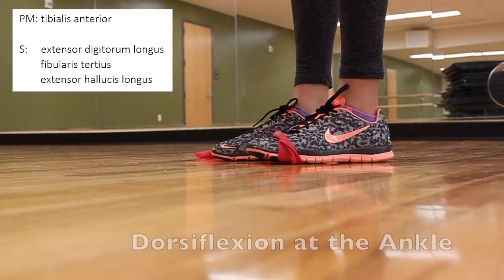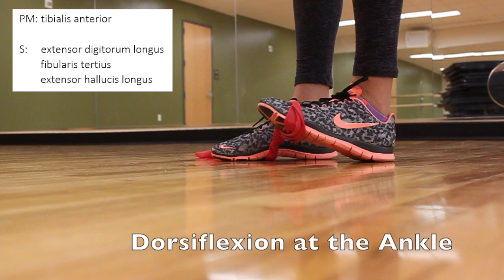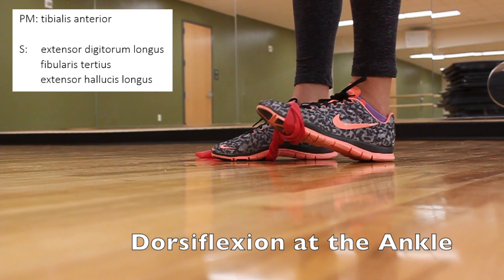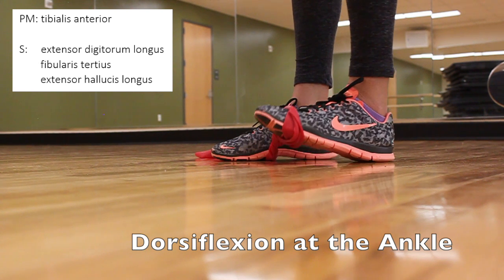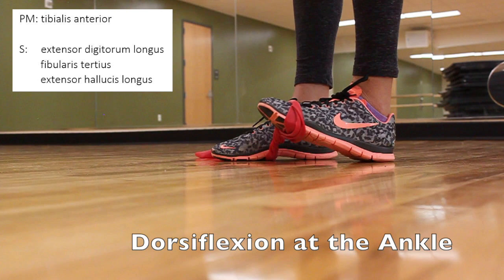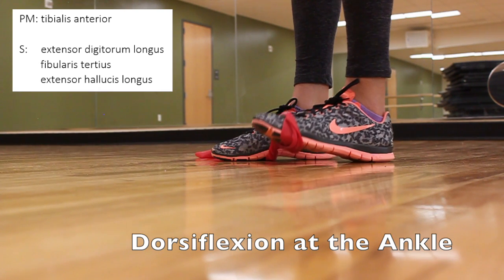This is dorsiflexion at the ankle. The prime mover is tibialis anterior. The synergists are extensor digitorum longus, fibularis tertius, and extensor hallucis longus.